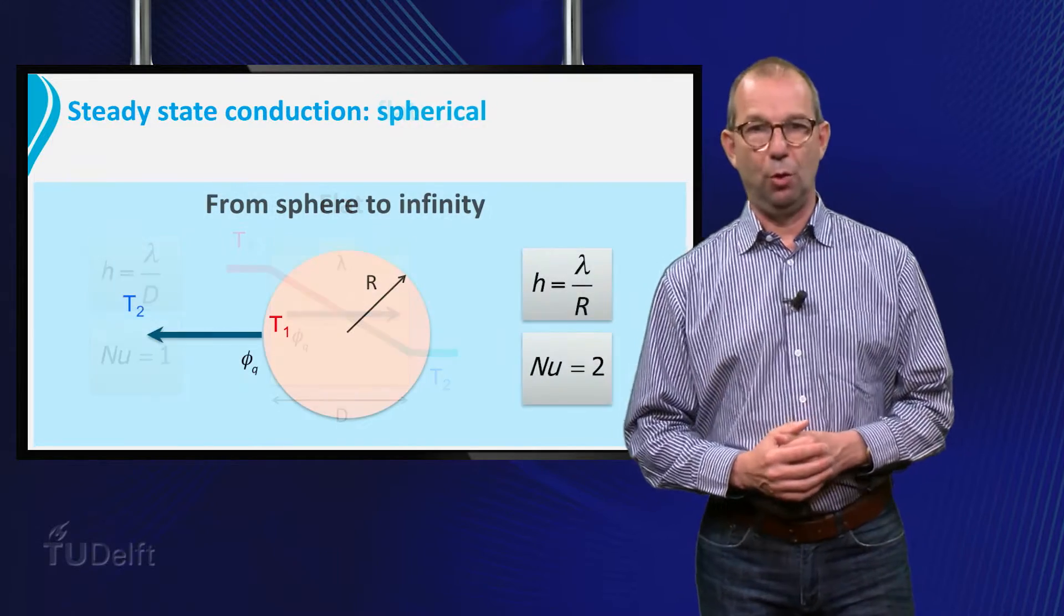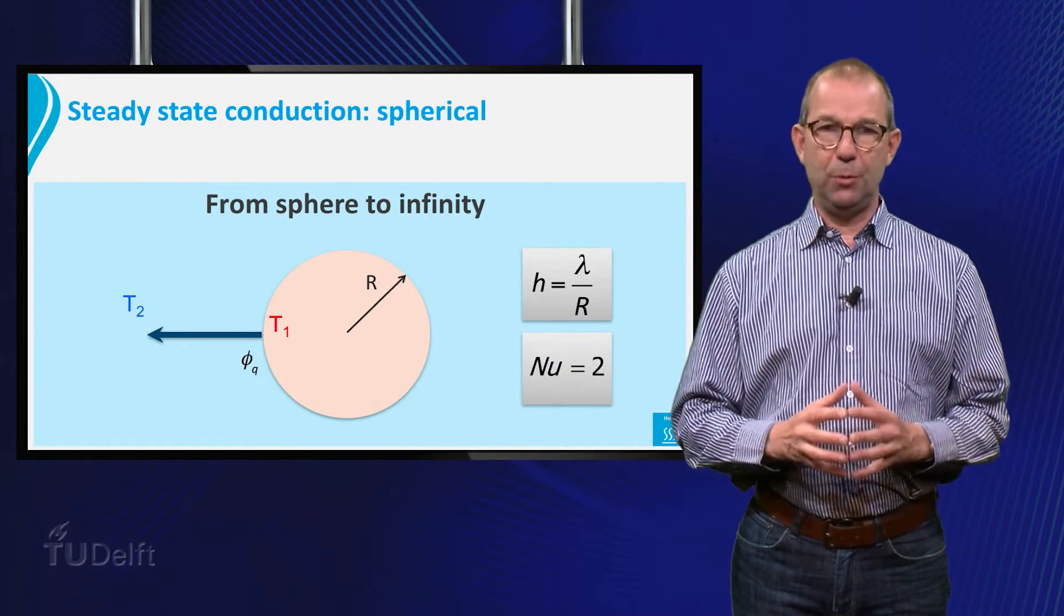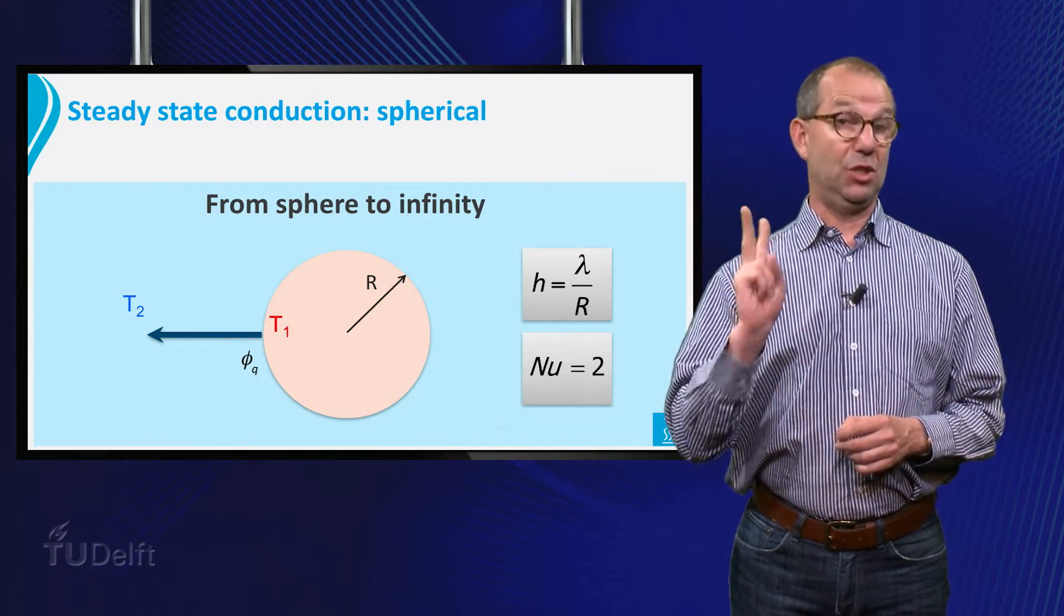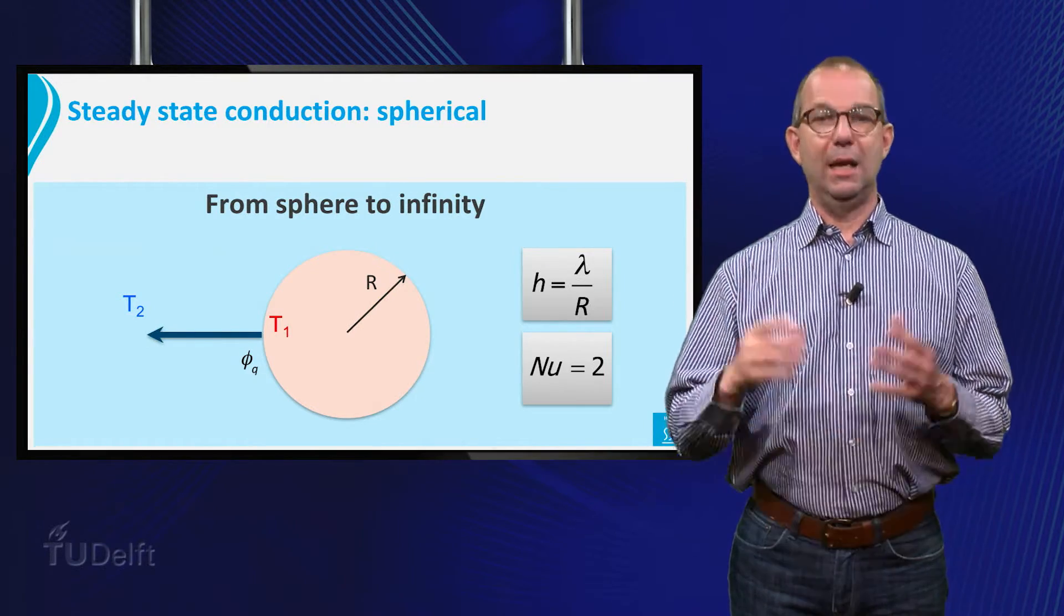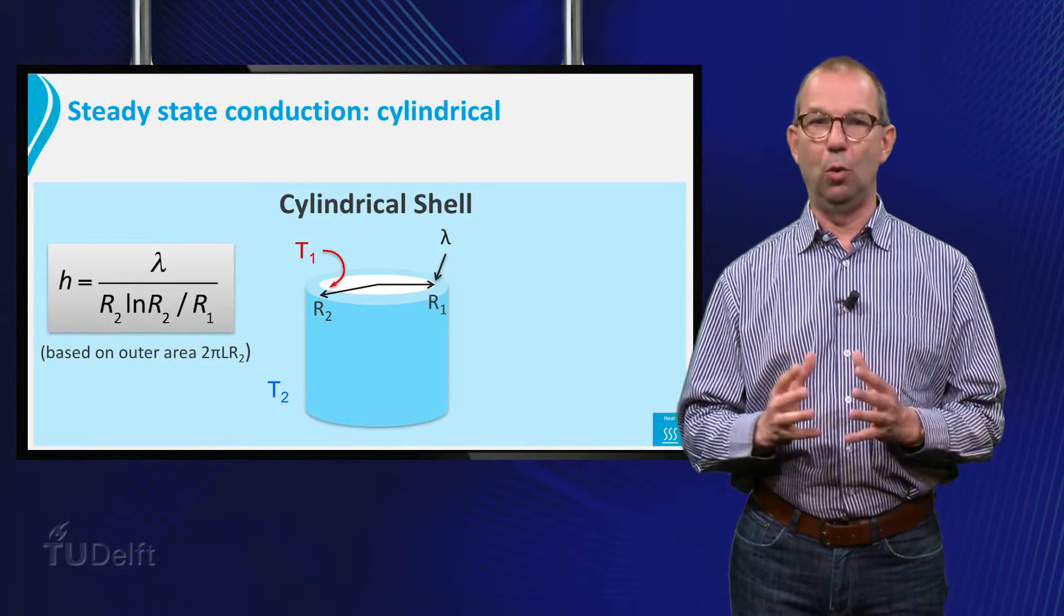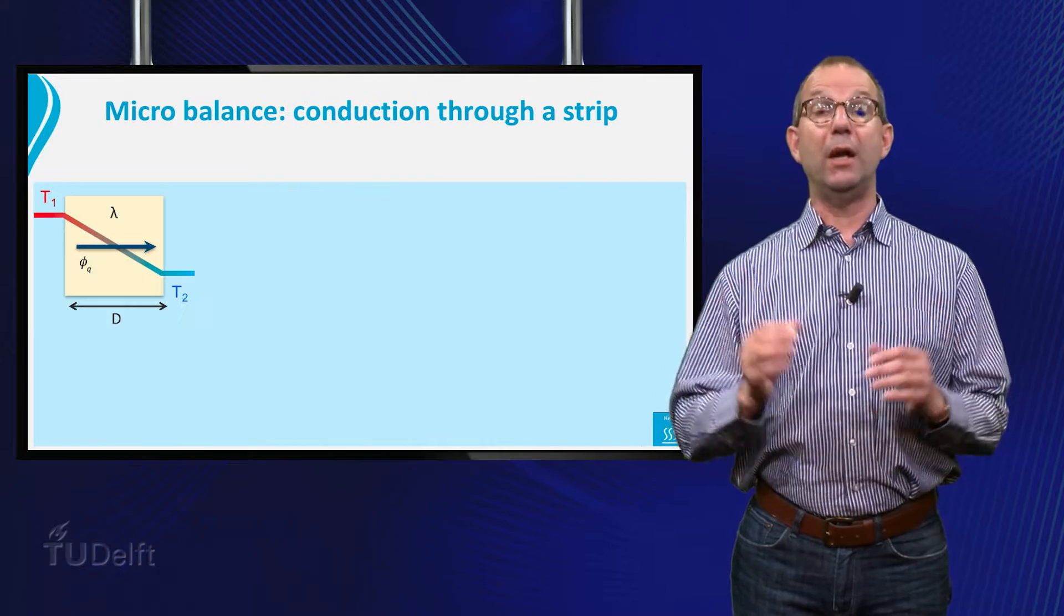We also saw that for steady state conduction from the surface of a sphere to infinity, the Nusselt number is 2. And we had a more complicated expression for a cylindrical wall.